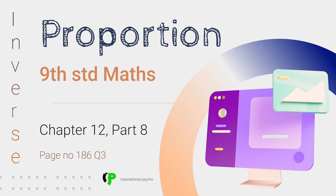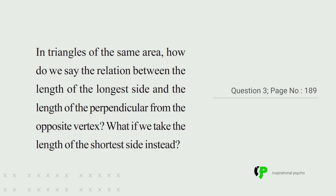So, question number 3: in triangles of same area, how do we say the relation between the length of the longest side and the length of the perpendicular from the opposite vertex? The first part is that, and the second part is: what if we take the length of the shortest side instead?